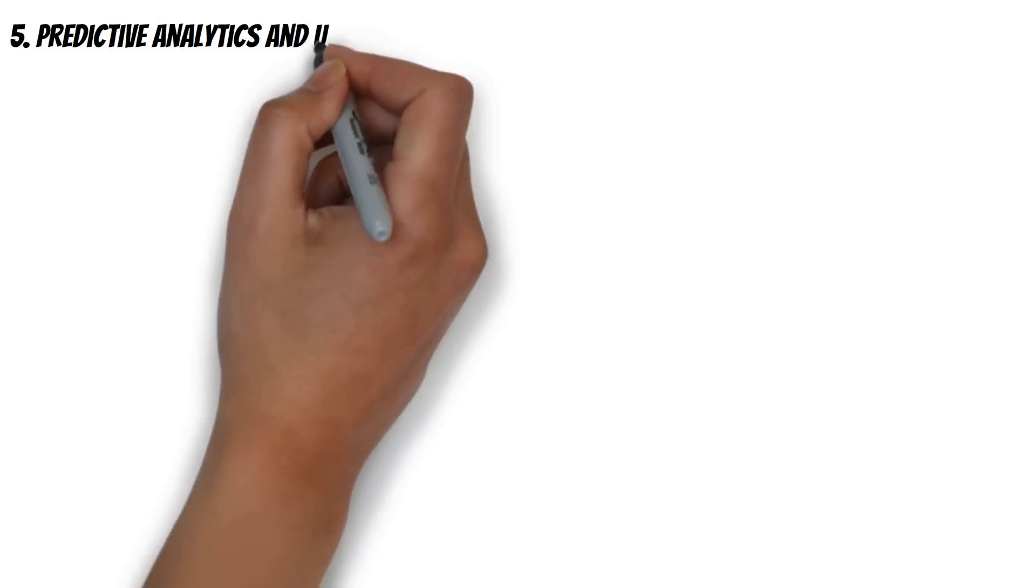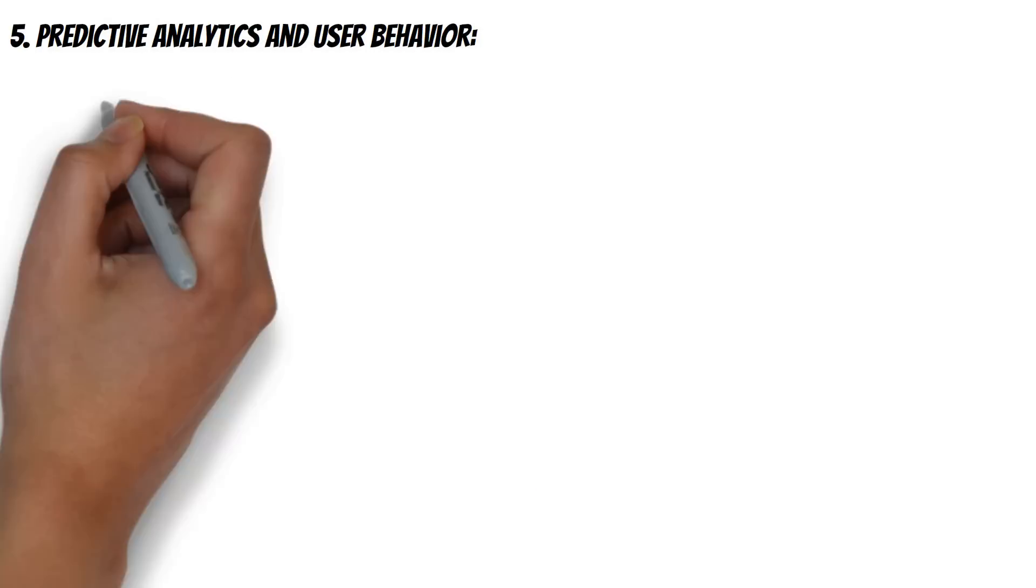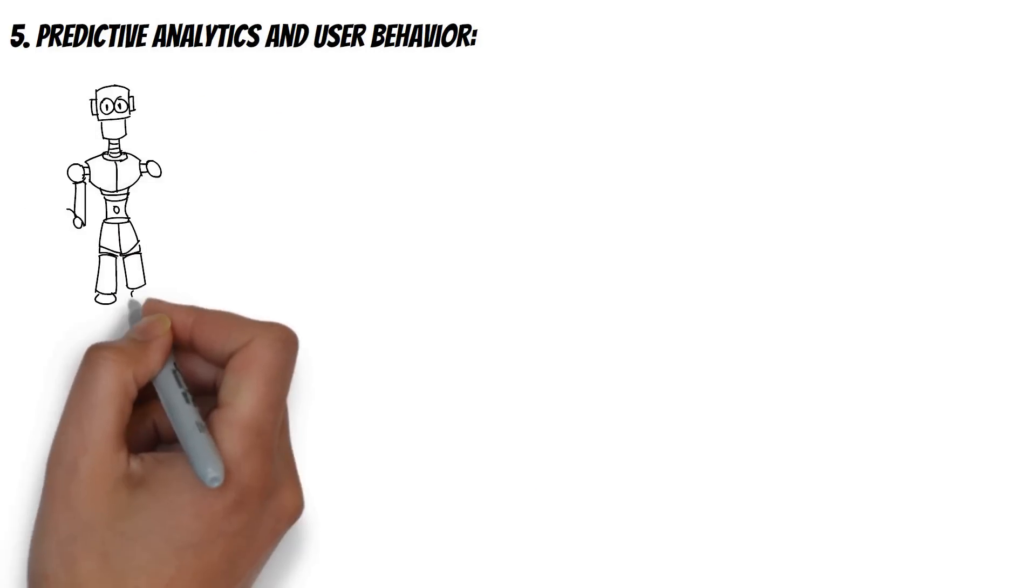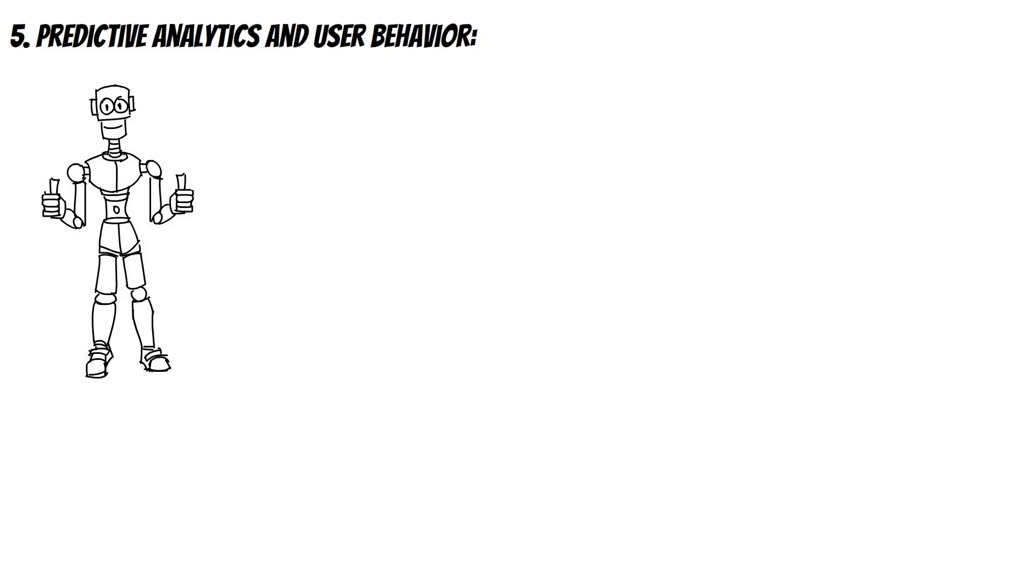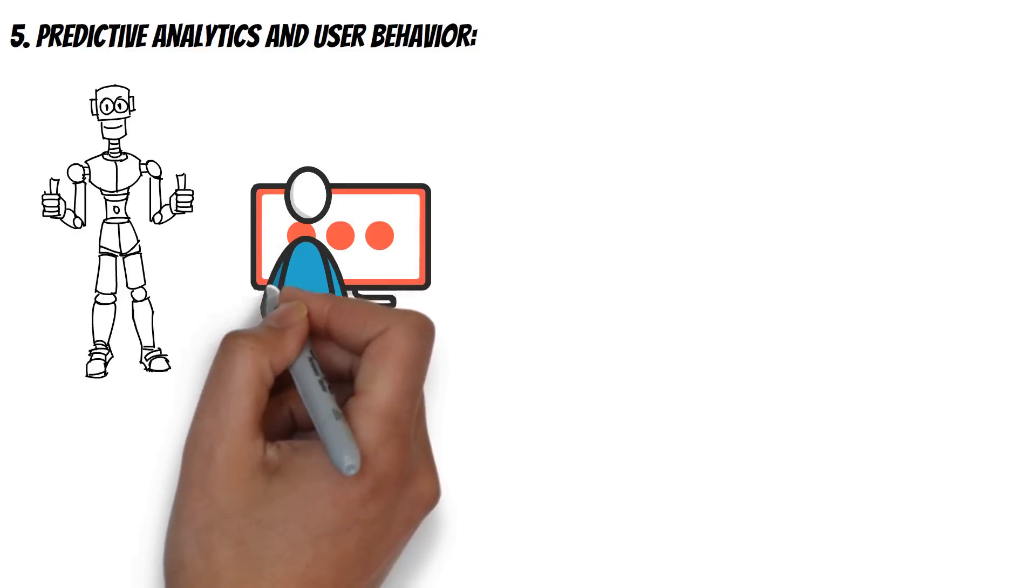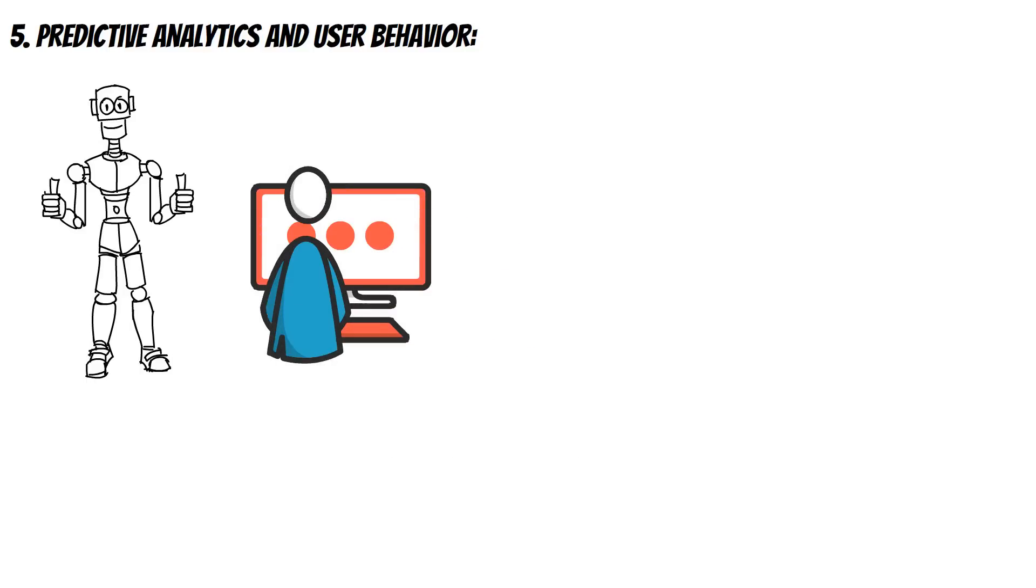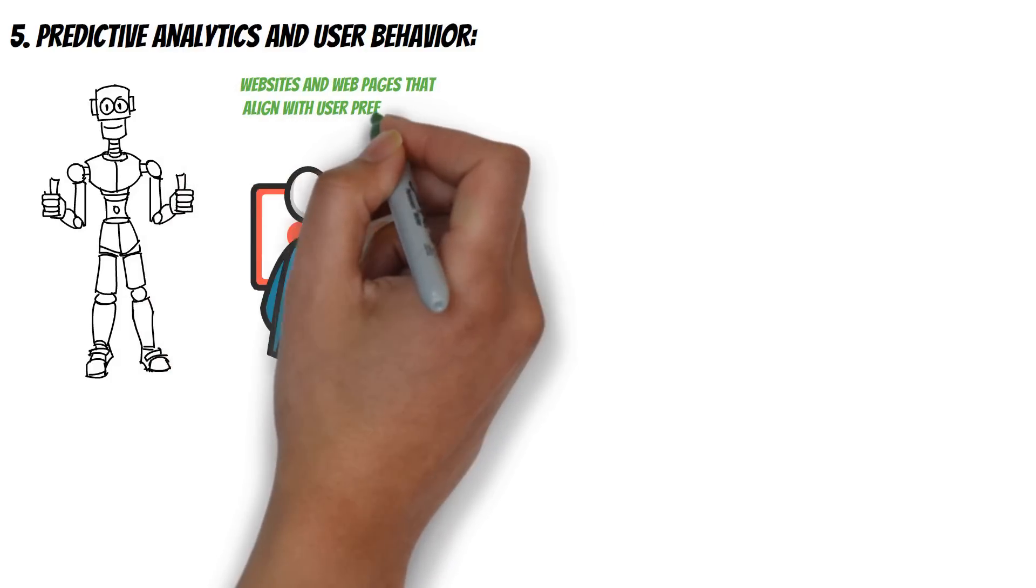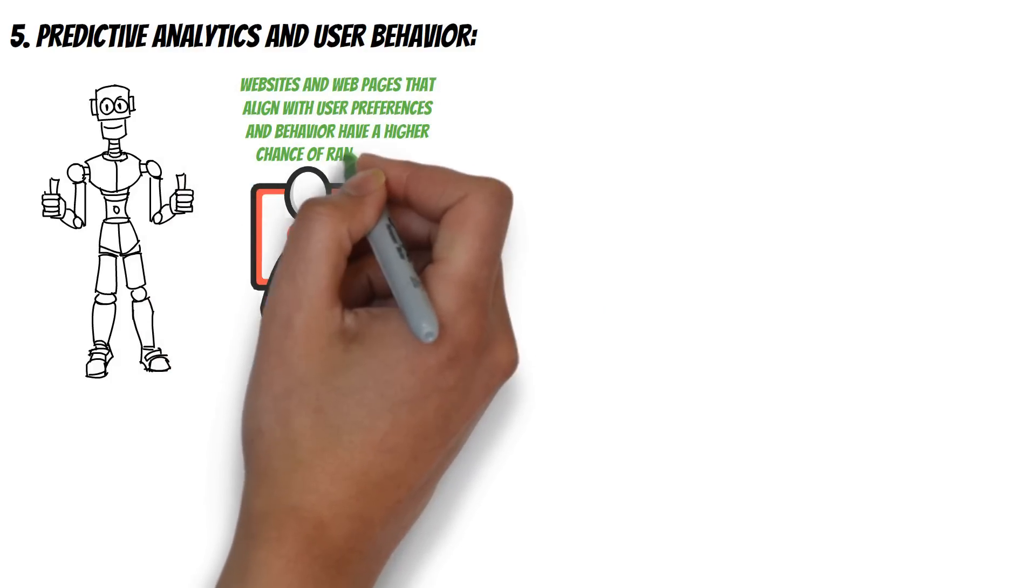Predictive Analytics and User Behavior: AI-powered predictive analytics plays a significant role in SEO. By analyzing user behavior patterns, search engines can predict user preferences and deliver personalized search results. This means that websites and webpages that align with user preferences and behavior have a higher chance of ranking well.